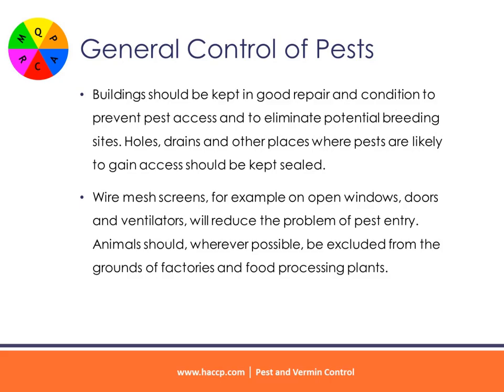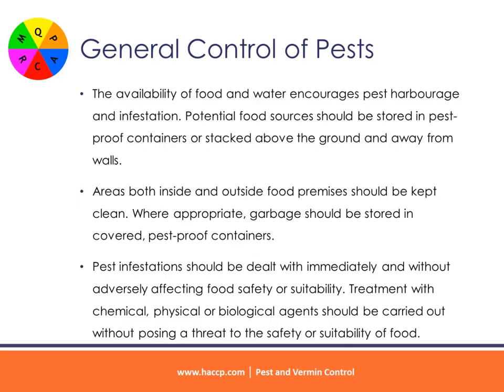Wire mesh screens, for example on open windows, doors and ventilators, will reduce the problem of pest entry. Animals should, wherever possible, be excluded from the grounds of factories and food processing plants. The availability of food and water encourages pest harbourage and infestation. Potential food sources should be stored in pest proof containers or stacked above the ground and away from walls.